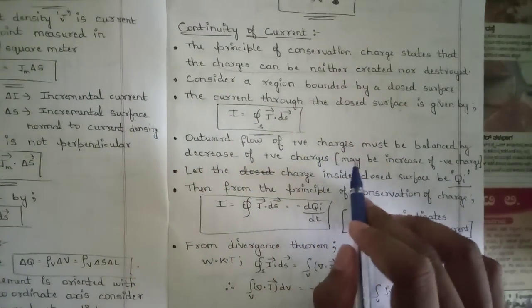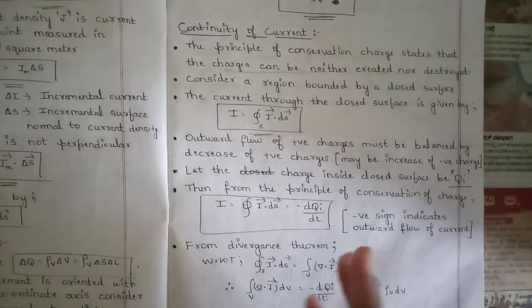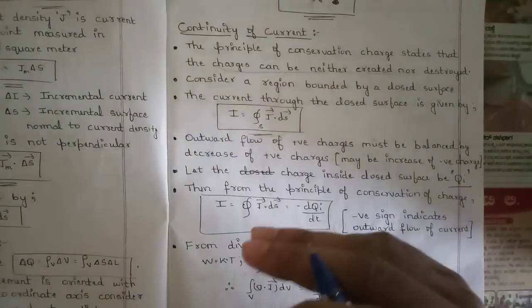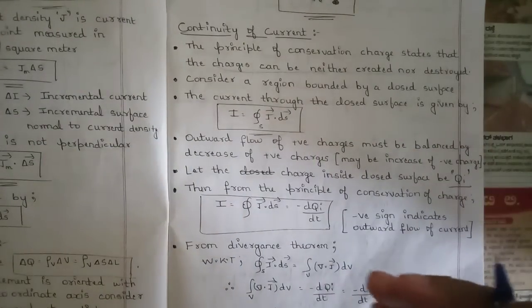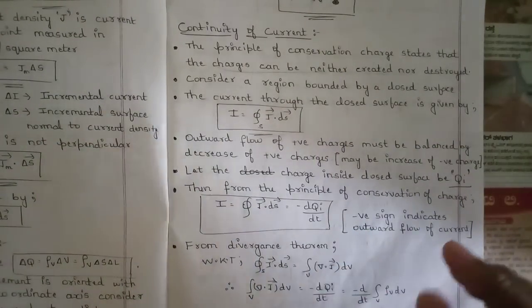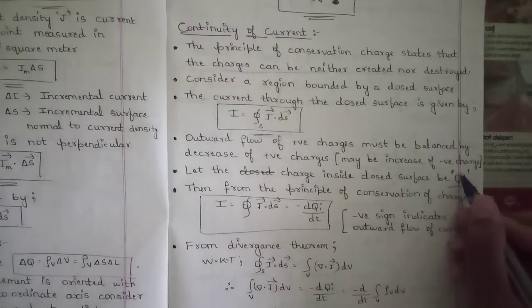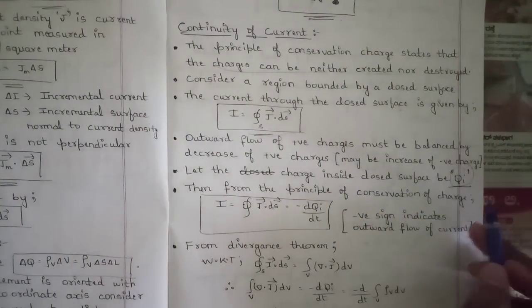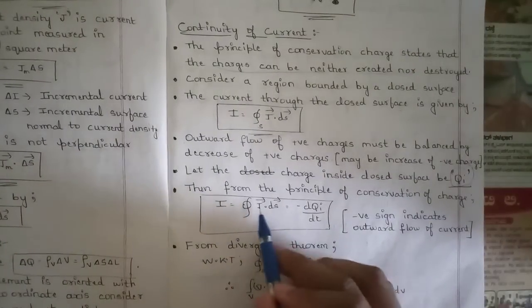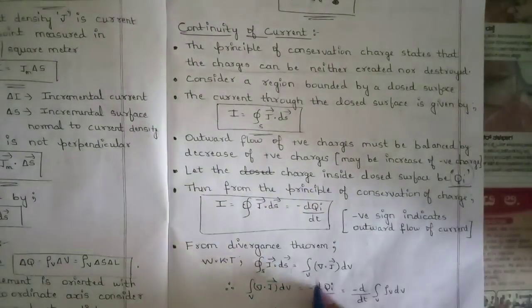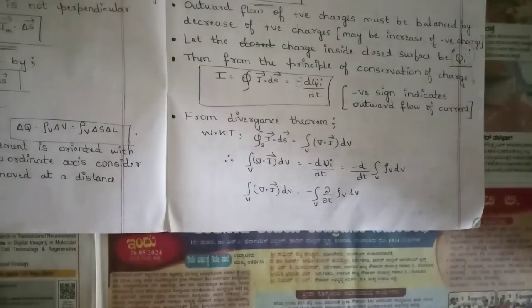The outward flow of positive charges must be balanced by a decrease of positive charges inside (or increase of negative charges). Let the charge inside the closed surface be Qi. From conservation of charge: ∮ J · dS = −dQi/dt, where the negative sign indicates outward flow of current.